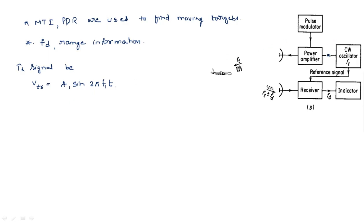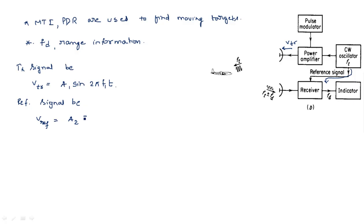This transmitted signal V_TR is also taken as a leakage signal that enters into the receiving section, known as the reference signal. The reference signal V_ref has a different amplitude but the same frequency: A2 sin(2π f1 t). Phase information does not vary, but amplitude varies due to distance.